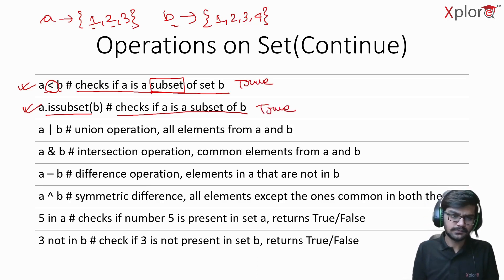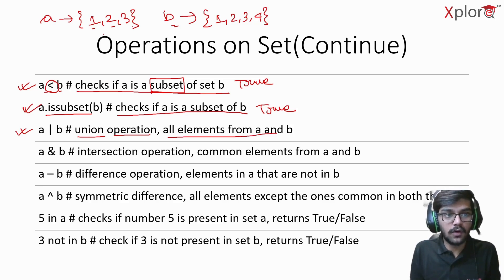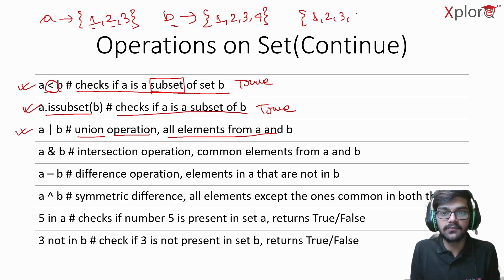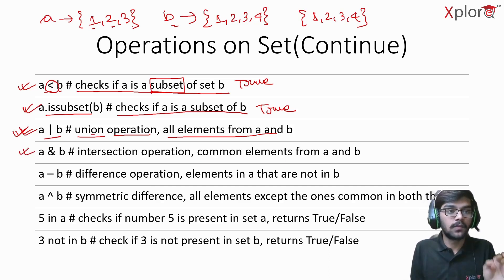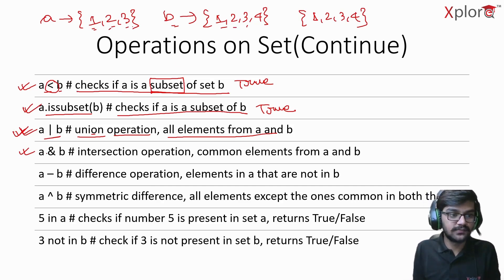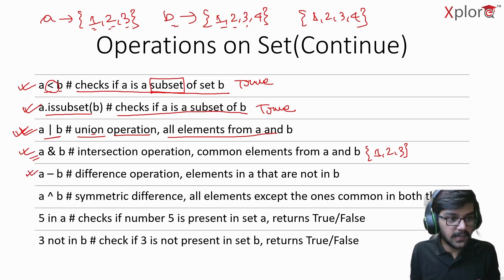The union operation 'a | b' gives all elements from both A and B, so {1, 2, 3, 4} is returned. The intersection operation 'a & b' gives the common elements — in this case one, two, and three are common between A and B, so {1, 2, 3} is returned.